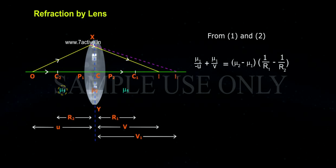From 1 and 2, Mu1 by minus U plus Mu1 by V equals to Mu2 minus Mu1 into 1 by R1 minus 1 by R2. Mu1 of 1 by V minus 1 by U equals to Mu2 minus Mu1 into 1 by R1 minus 1 by R2.